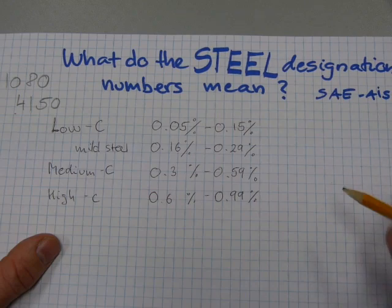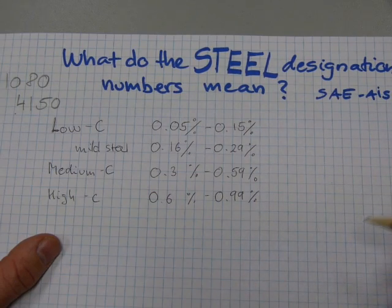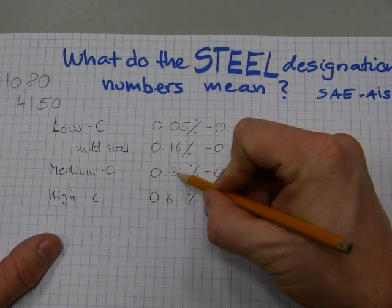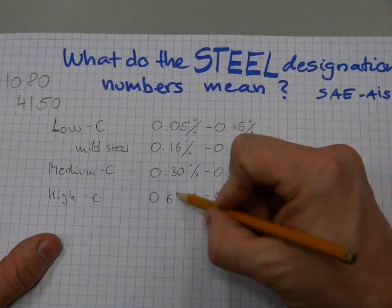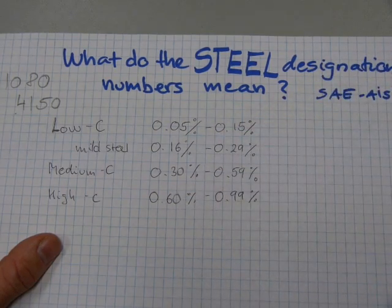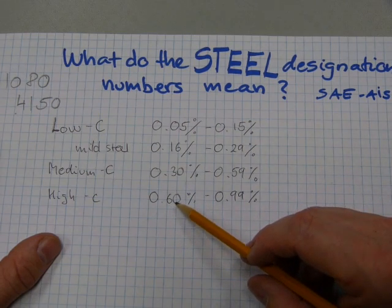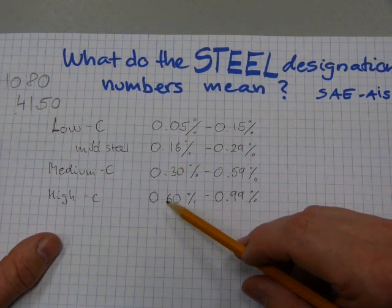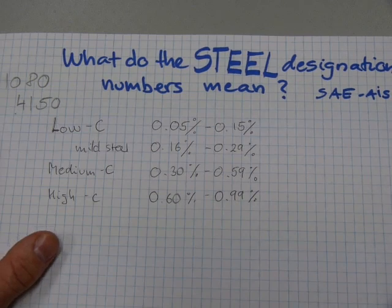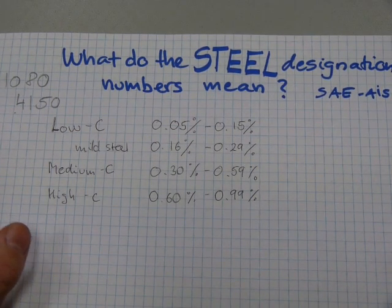And I guess it's maybe a little easier to compare these numbers if I make this one thirty and this one sixty. And again, this is not sixty percent carbon, this is not six percent carbon, this is zero point six percent carbon, a little over half a percent.